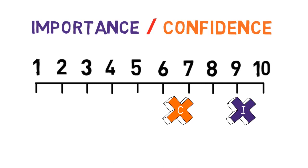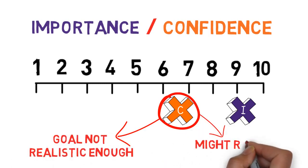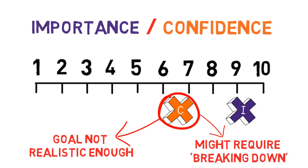If you find that the client has a confidence level that doesn't seem encouraging, less than eight for example, it may be an indication that the stated goal isn't realistic enough and might require breaking down into more manageable steps.